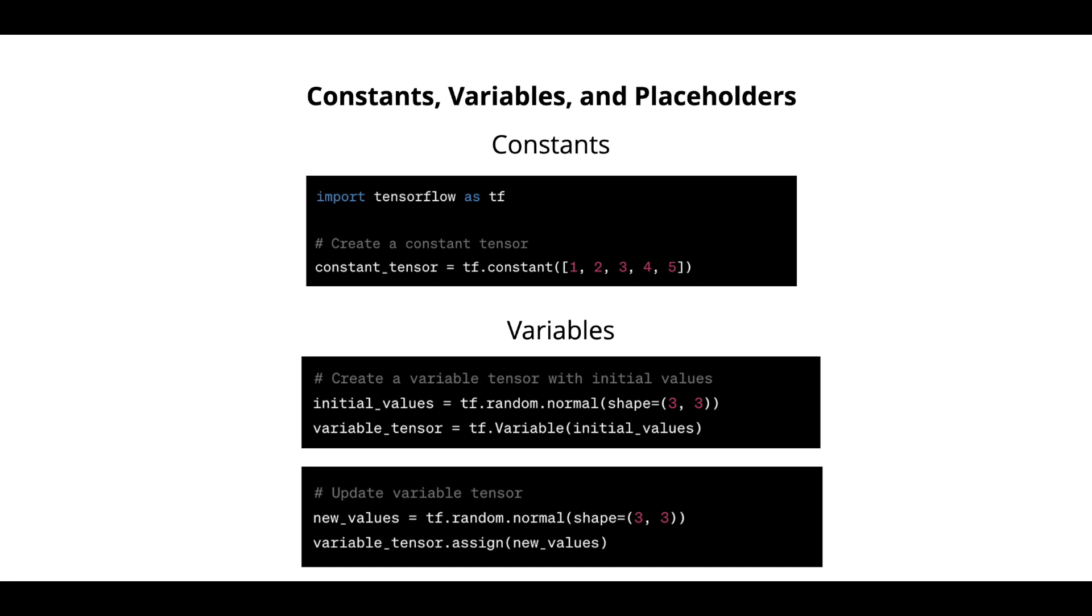Next, variables. Variables are tensors whose values can be modified during the execution of tensorflow graph. They are used to hold model parameters such as weights and biases that need to be updated during training. So how do you create variables?